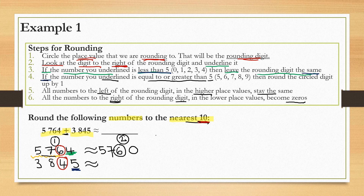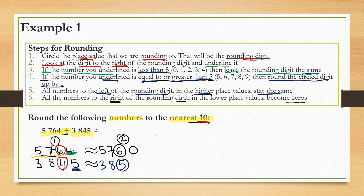Step 4: if the number that we underlined is equal to or greater than 5, we round the circled digit up by 1. Since 5 is equal to 5, we need to round the 4, our circled digit, up by 1. Step 5: all the numbers to the left of the rounding digit stay the same, so the 3 and the 8 stay the same. Step 6: all the numbers to the right of the rounding digit become 0. Therefore, 3845 is approximately equal to 3850 when rounding to the nearest 10.